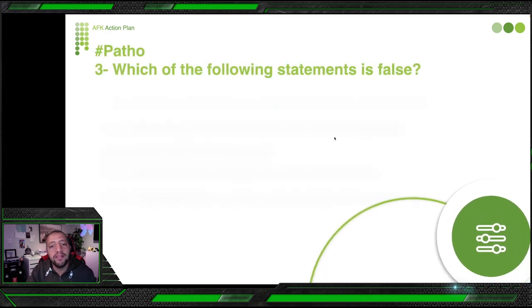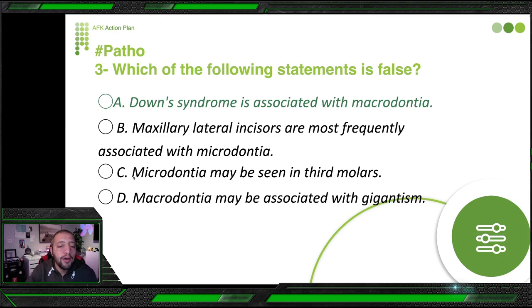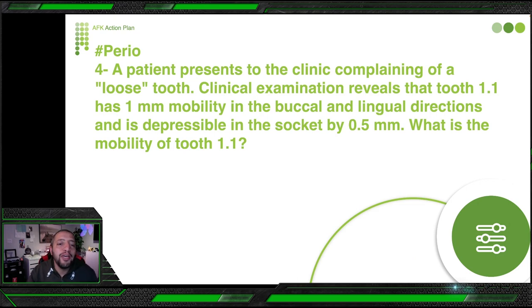Going back to the question: Down syndrome is associated with macrodontia — false, it's microdontia. Maxillary lateral incisors most frequently associated with microdontia — correct, this refers to the peg-shaped lateral. Macrodontia may be seen in third molars — yes, this is true. Macrodontia may be associated with gigantism — for sure, that patient has everything bigger than usual so they might have macrodontia. Therefore the false statement is that Down syndrome is associated with macrodontia.